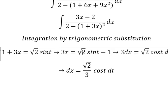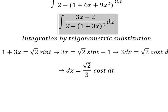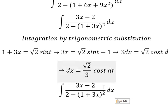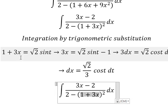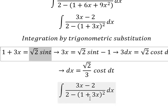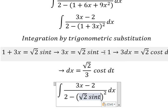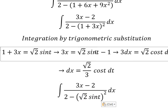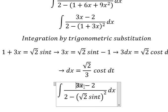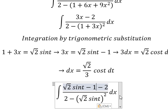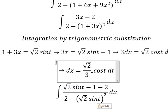Because we have 3x, I will put number one to the right side. So we have the square root of number two times sin(t) minus one. We change 3x by this expression, and dx we change by this expression.